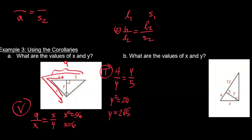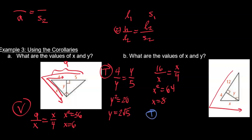We can work out another example. Using the V theorem, this is 16: 16 over X equals X over 4, so X squared equals 64, which means X equals 8. Using the T theorem to find Y: 12 over Y equals Y over 4, so Y squared equals 48. Since 48 is divisible by 16, Y equals 4 times the square root of 3.